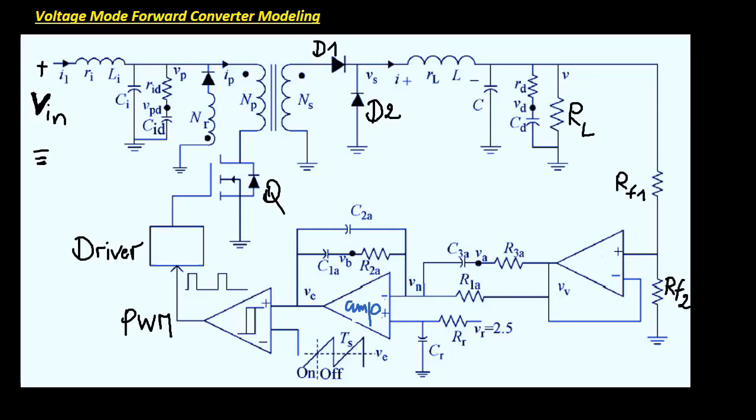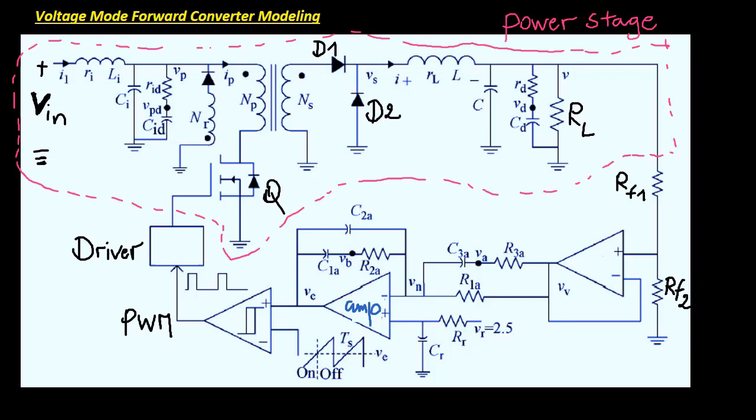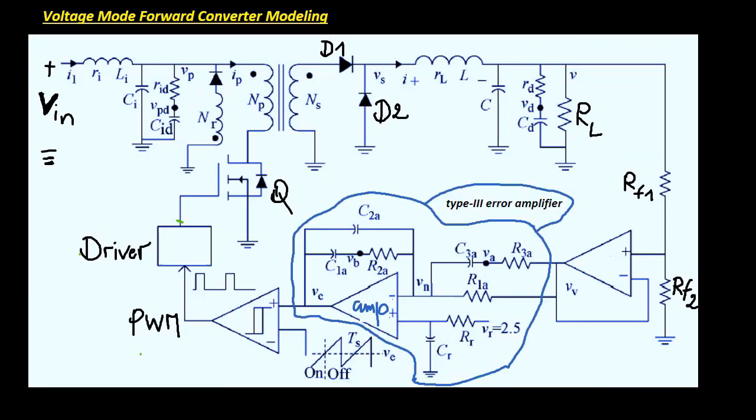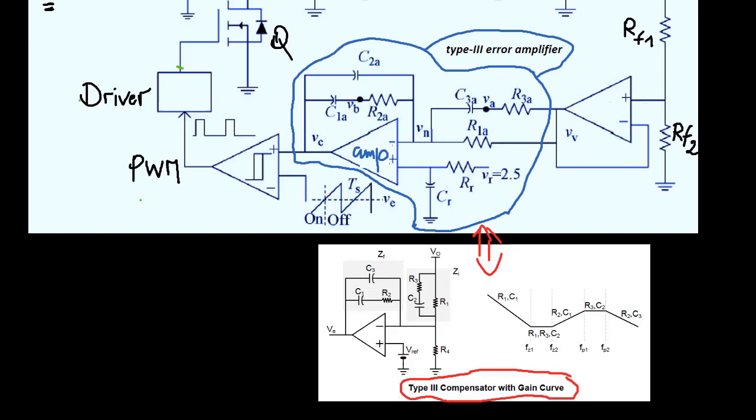This is a typical forward pulse width modulated DC-DC converter with voltage mode control. A type 3 error compensator, with C3A and R3A included, is used.